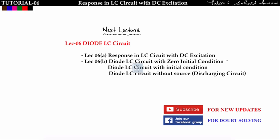That's all for this lecture. In the next lecture we will start the LC circuit with a diode, covering zero initial condition, non-zero initial condition, and the discharging circuit with waveforms. We will also examine at steady state what the voltages across the capacitor, inductor, and diode are. If you understood the concept, please like this video and subscribe to the channel for updates.